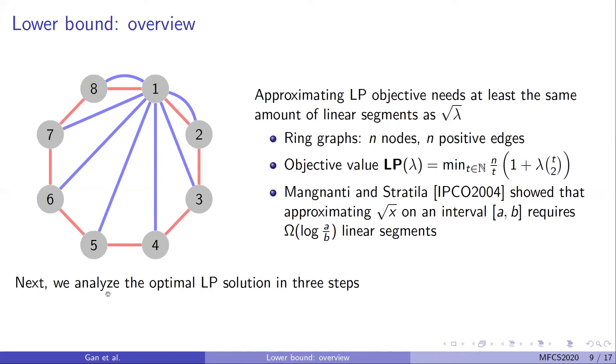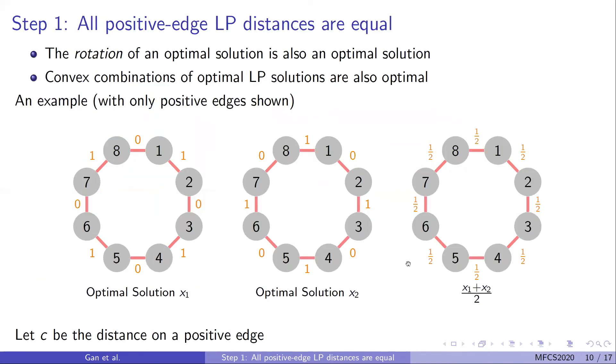To show this lower bound, the key is to connect the task of approximating LP objective to approximating the square root function with linear segments. We first establish an explicit expression for the objective value LP of lambda, then show that this LP of lambda is closely connected to the square root function. Approximating LP is as hard as approximating the square root function, and approximating the square root function needs at least log A over B linear segments, where the approximation takes place on the interval A to B.